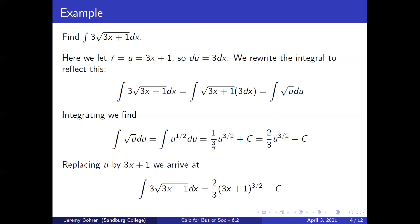Integrating, we find the integral of the square root of u du equals the integral of u to the one-half du, which is one over three-halves times u to the three-halves plus c, which is two-thirds u to the three-halves plus c. Replace u by 3x plus 1 to get the integral of 3 times the square root of 3x plus 1 dx equals two-thirds times 3x plus 1 to the three-halves plus c.